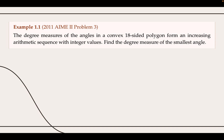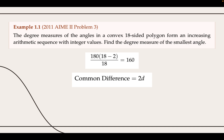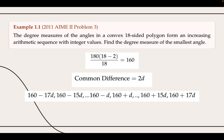Our first step is to find the average of each angle, which is 160. Since there is an even number of angles, none of them will have a degree measure of 160. Therefore, we let the common difference of the sequence be 2d, and write the 18 angles in order from least to greatest as shown. Since each angle measure must be an integer, d must be a positive integer. We also know each degree measure must be less than 180 since the polygon is convex, so d must equal 1. The smallest angle is therefore 160 minus 17 times 1, which equals 143.